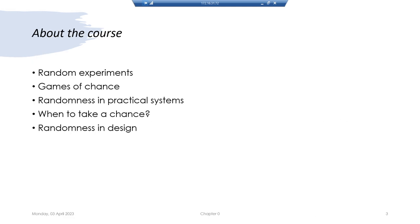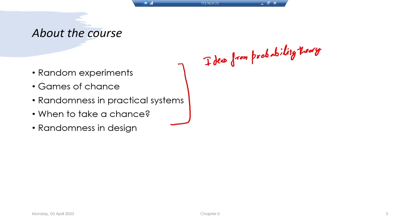Since this course is mainly based around ideas from probability theory, we will talk about random experiments and how to simulate those. We will talk about games of chance and how to simulate those. We will talk about practical systems, how randomness comes into those systems and how we simulate that, and then about randomness in design and how it affects our design solutions.